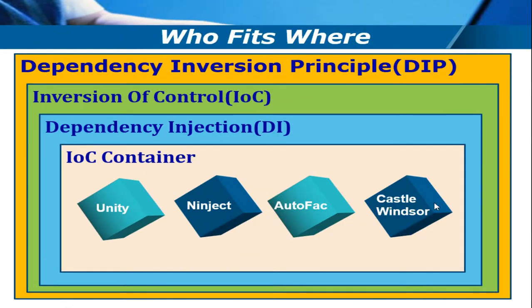To summarize: we discussed DIP — the Dependency Inversion Principle — then IOC (Inversion of Control), then dependency injection, and then IOC containers. A diagram clarifies how they fit together. DIP at the broadest level says your high level module should not depend on your low level module but on an abstraction layer. IOC provides a mechanism to develop that abstraction layer. Under IOC there are two types: dependency injection and service locator — we are focusing on dependency injection, which is a design pattern that creates the abstraction layer.